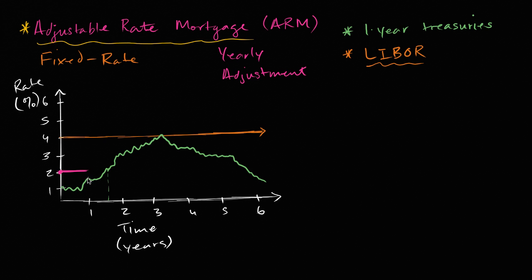And the way that an ARM works is, at some period, sometimes every six months, sometimes every year, your rate will be reset. So let's say we're dealing with an adjustable rate mortgage and it resets every year. Yearly adjustment in the case that we're looking at. So that means you're going to pay your 2% for the first year, from time zero to one year going by. And then at that point, they're going to look at what the underlying index is. And so the index now looks like it's at about 1.6%. So you're going to pay a 1% premium over that. So you're going to pay 2.6% for the next year.